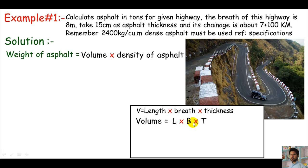Volume equals L times breadth times thickness. The length is given in chainage form: 7+100. The 7 means 7 kilometers, so I'll convert 7 kilometers into meters by multiplying 7 with 1000. This converts 7 kilometers into meters. Then I'll add 100. This is the total length in the formula. Breadth is 8 meters. Thickness is 15 centimeters, which is 0.15 meters.